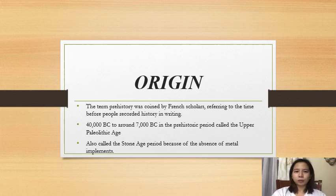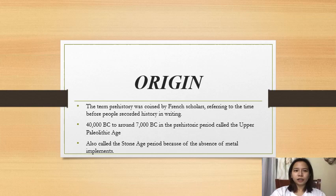The term prehistory was coined by French scholars, referring to the time before people recorded history in writing. This is the longest period in the past of modern man, homo sapiens, that lasted about 400,000 years.